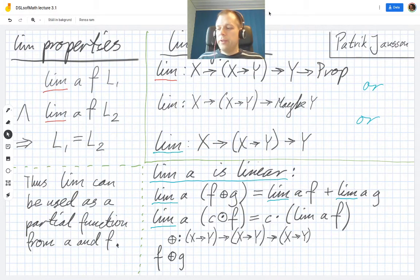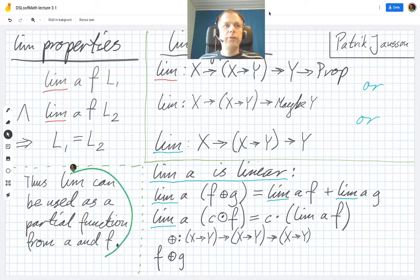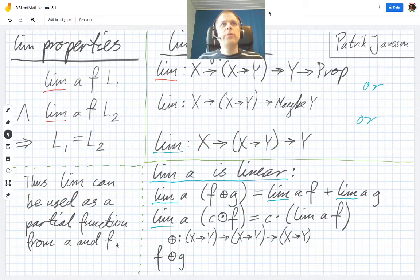So that means that LIM can be used as a partial function. If you've got A and F, you can compute L if it exists. And that means that we can start thinking about different possible types of LIM.